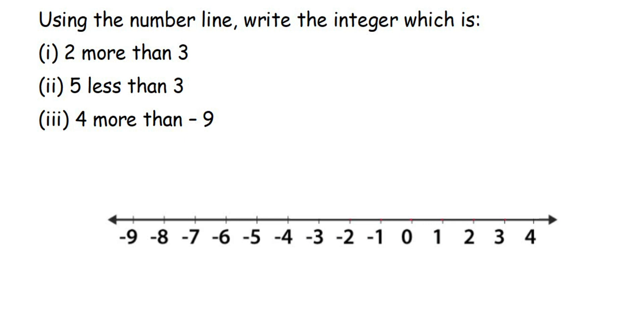Hey everyone, this is a question on number line. The question is: using the number line, write the integer which is 2 more than 3, 5 less than 3, and 4 more than minus 9.